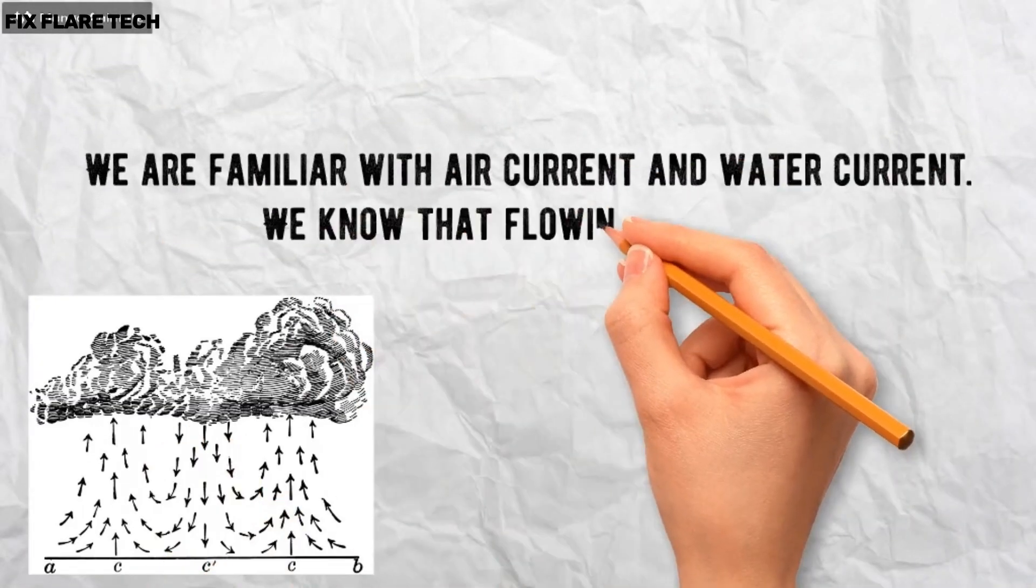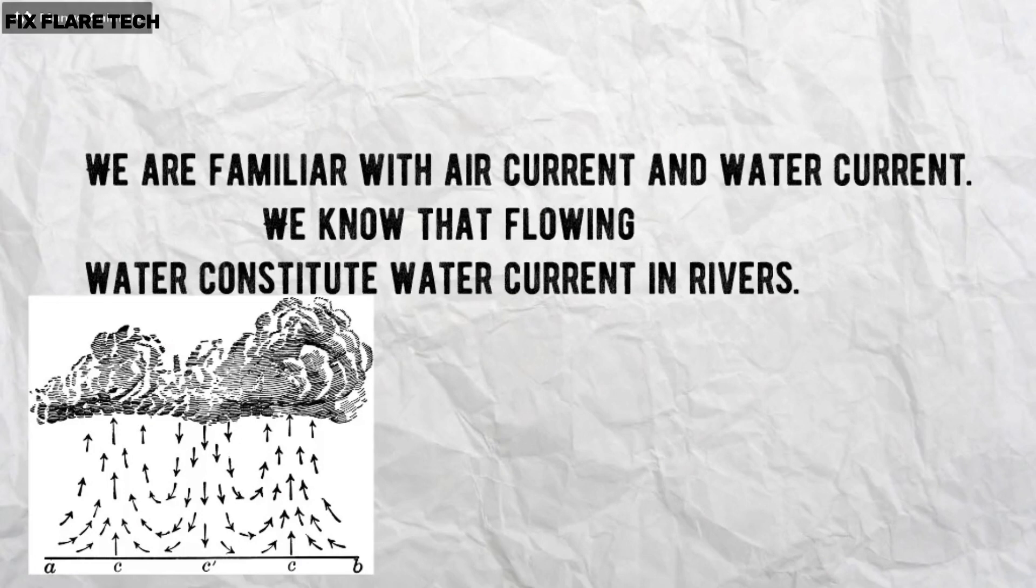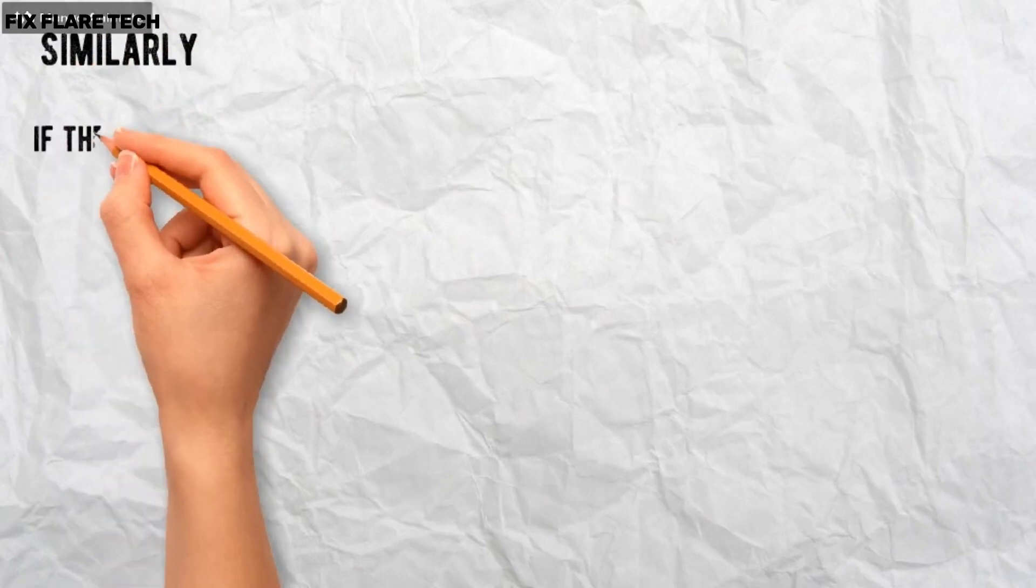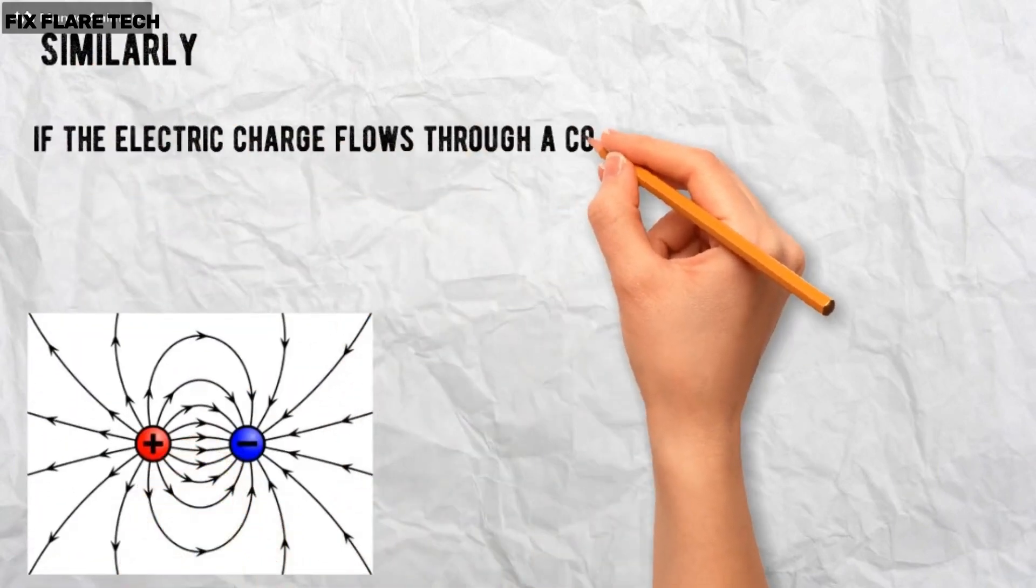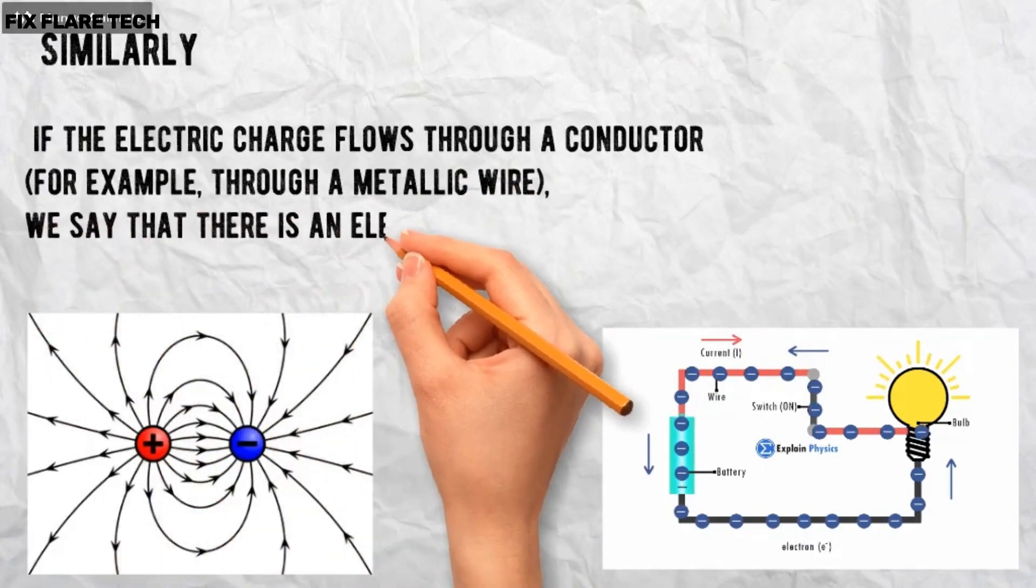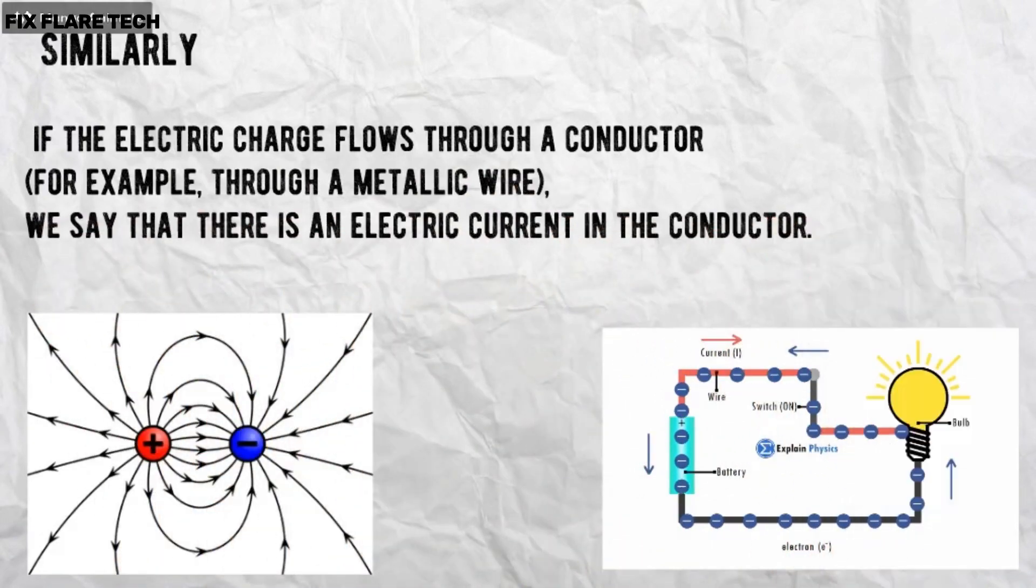We are familiar with air current and water current. We know that flowing water constitutes water current in rivers. Similarly, if the electric charge flows through a conductor, for example, through a metallic wire, we say that there is an electric current in the conductor.